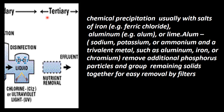For further treatment — tertiary treatment — the liquid effluent undergoes chemical precipitation, usually with salts of iron such as ferric chloride, or aluminum used as alum. Alum is sodium, potassium, or ammonium combined with trivalent metals such as aluminum, iron, or chromium. This chemical precipitation removes toxic chemicals and additional phosphorus particles, clumping remaining solids so they can be easily removed by filters.